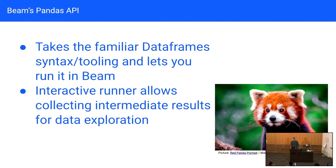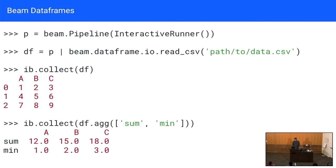Beam takes the traditional data frame syntax and lets you run it in a distributed way. It has an interactive runner that lets you materialize results as you're going along — you don't just want to see the start and end result. To switch your data frames to a distributed Beam approach, you just toss it in a pipeline and use IB.collect to materialize results, maintaining efficiency. The syntax is more or less the same; you can use the same data frame aggregate functions, just within a Beam pipeline. There's a notebook available in the Beam repo if you want to take a look.